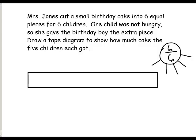Our number bond is going to match our tape diagram. So because we know that there are six pieces in the cake, we're going to take our tape diagram and cut it into six equal pieces. Now we're going to take part of the word problem and label our tape diagram with the children.